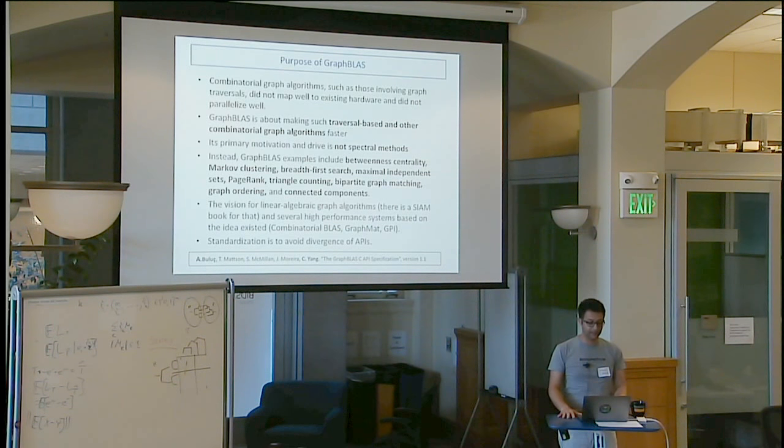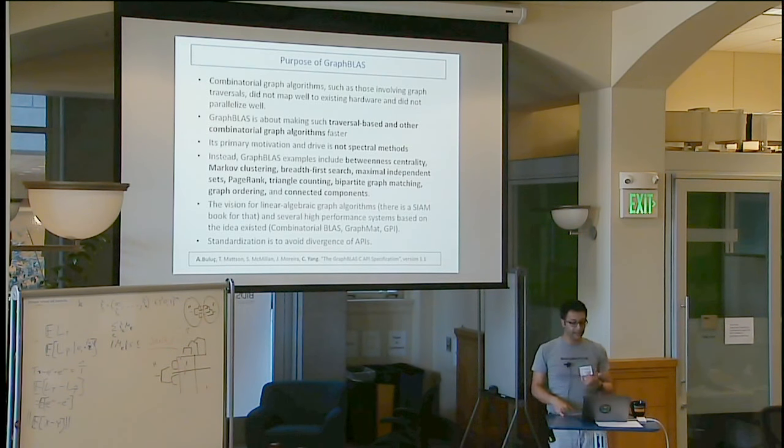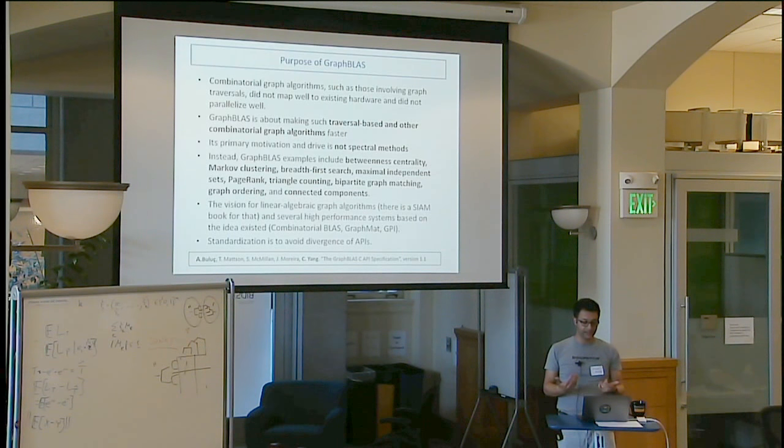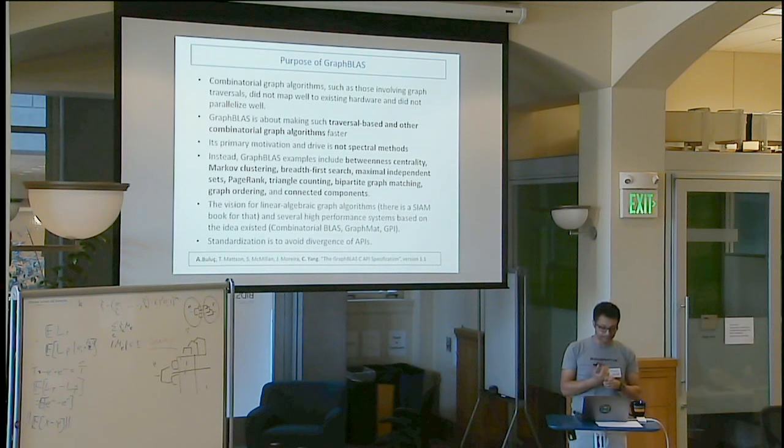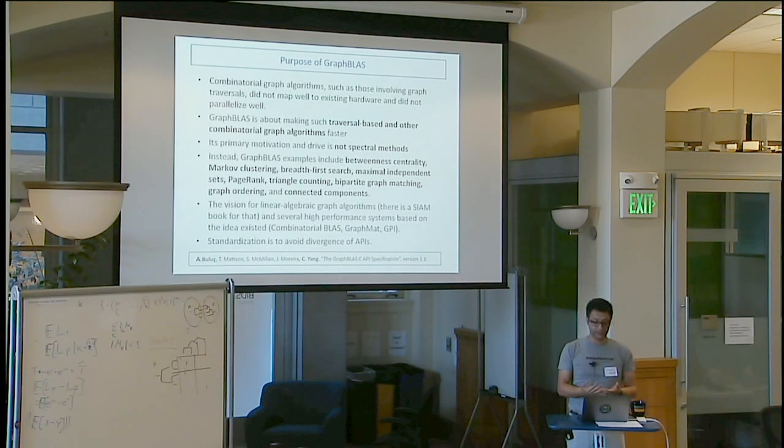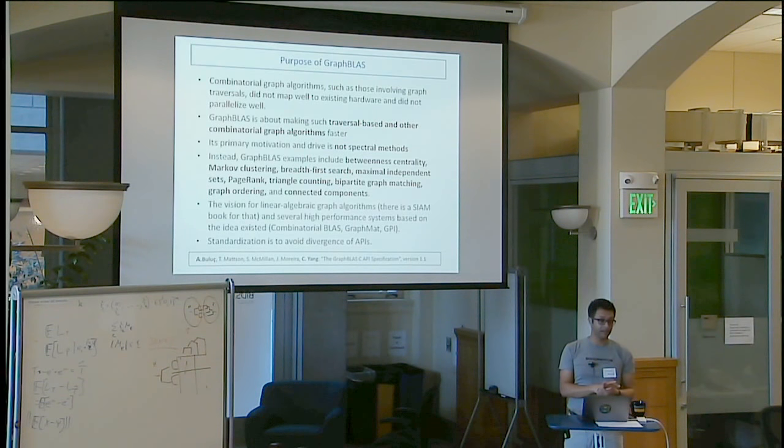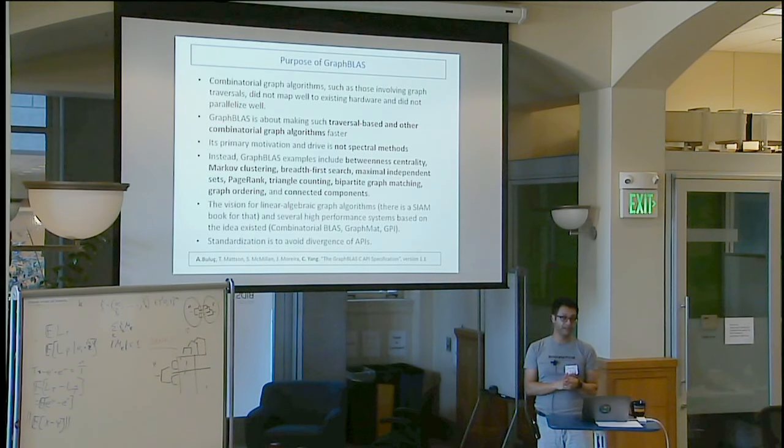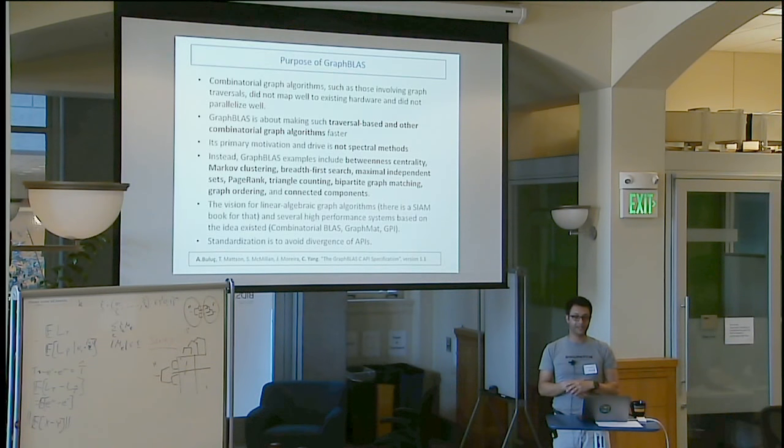So it is, there wasn't a lot of friction. This is important and this is a new slide that I never used. So the purpose of GraphBLAS, the main target is the kind of combinatorial graph algorithms, those involving standard graph traversals and which didn't map to existing hardware well and which didn't parallelize well. They used queues and stacks and serial data structures, but the computation didn't really call for it explicitly. It was just because the textbooks has described those problems like that. That's GraphBLAS's main goal is to make such traversal based and other combinatorial graph algorithms faster. It is applicable to methods like spectral clustering and whatnot, but that's not the main goal and that's not the driver.